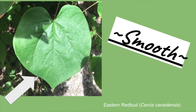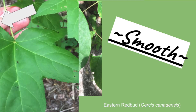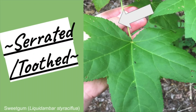Now let's take a look at some examples of leaf margins. The margin of a leaf is its edge. Let's take another look at the redbud — this margin would be considered smooth. Another common leaf margin would be serrated or toothed. If you look to where the arrow is pointing, you'll see that the sweet gum leaf has serrated margins. It isn't smooth like the redbud; it looks similar to a saw blade.